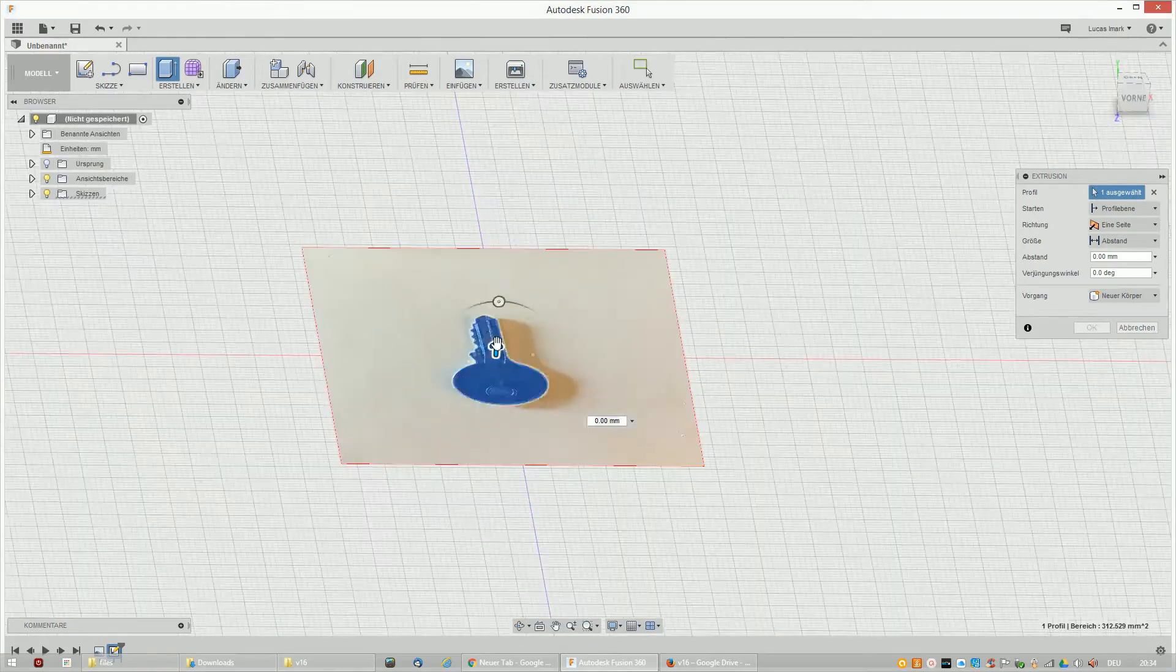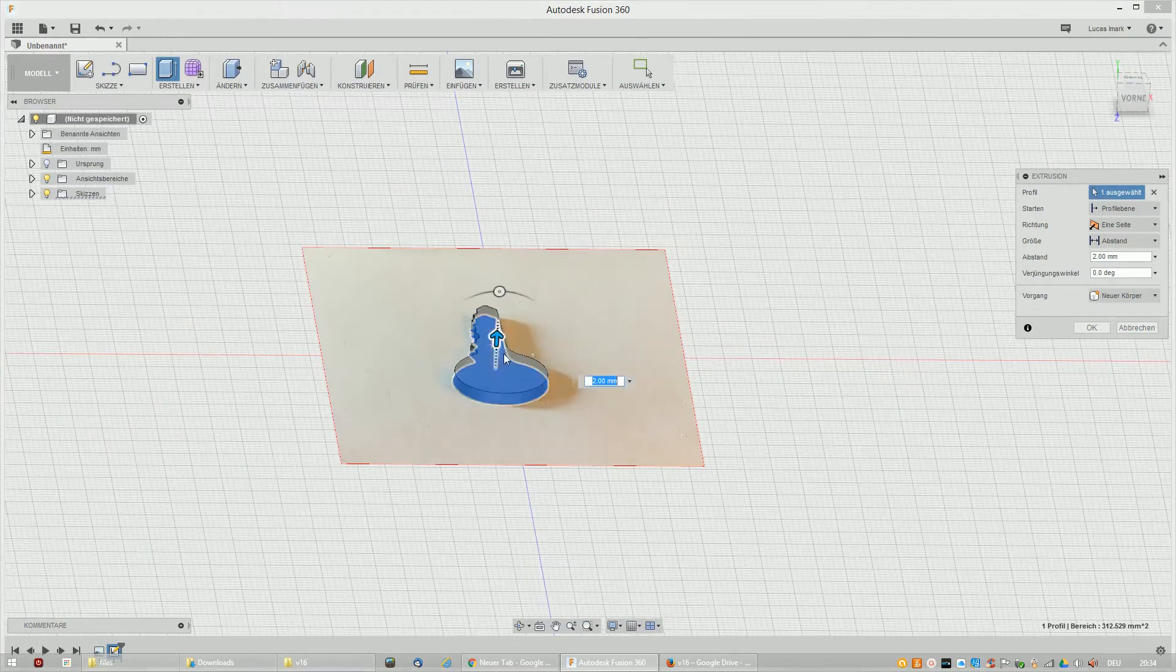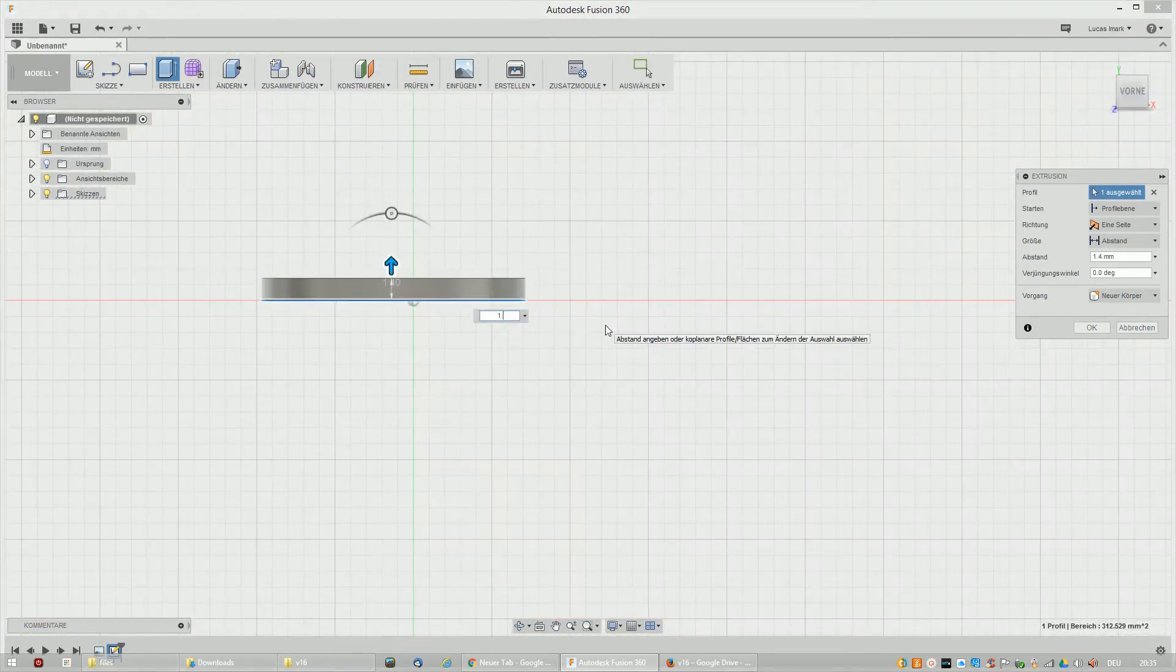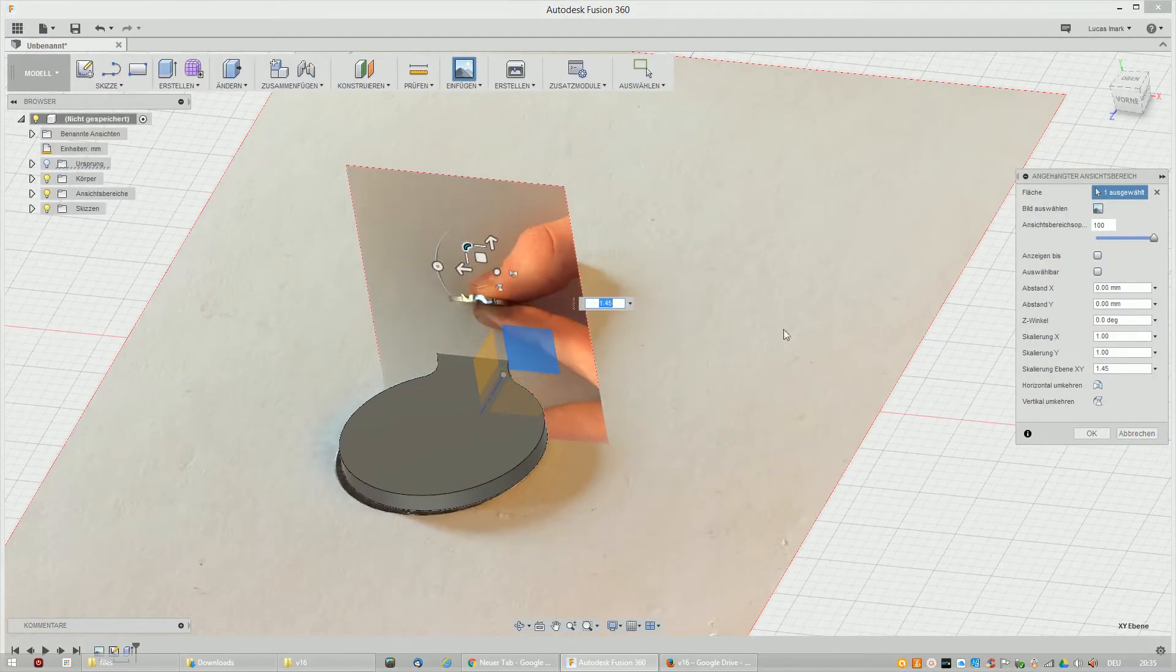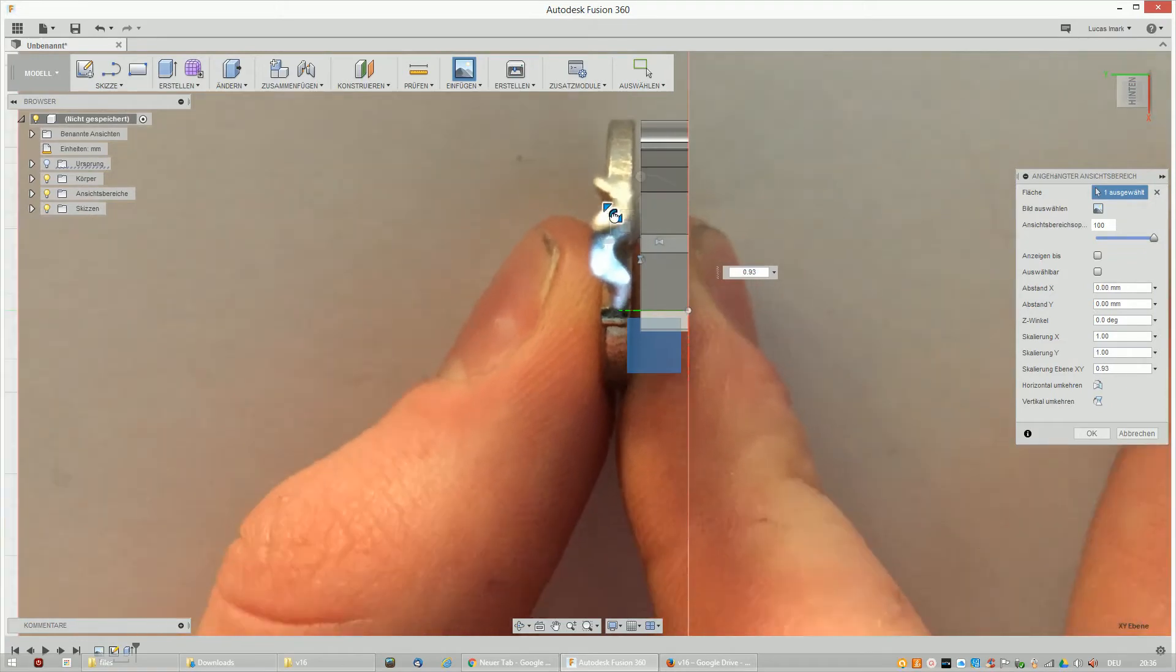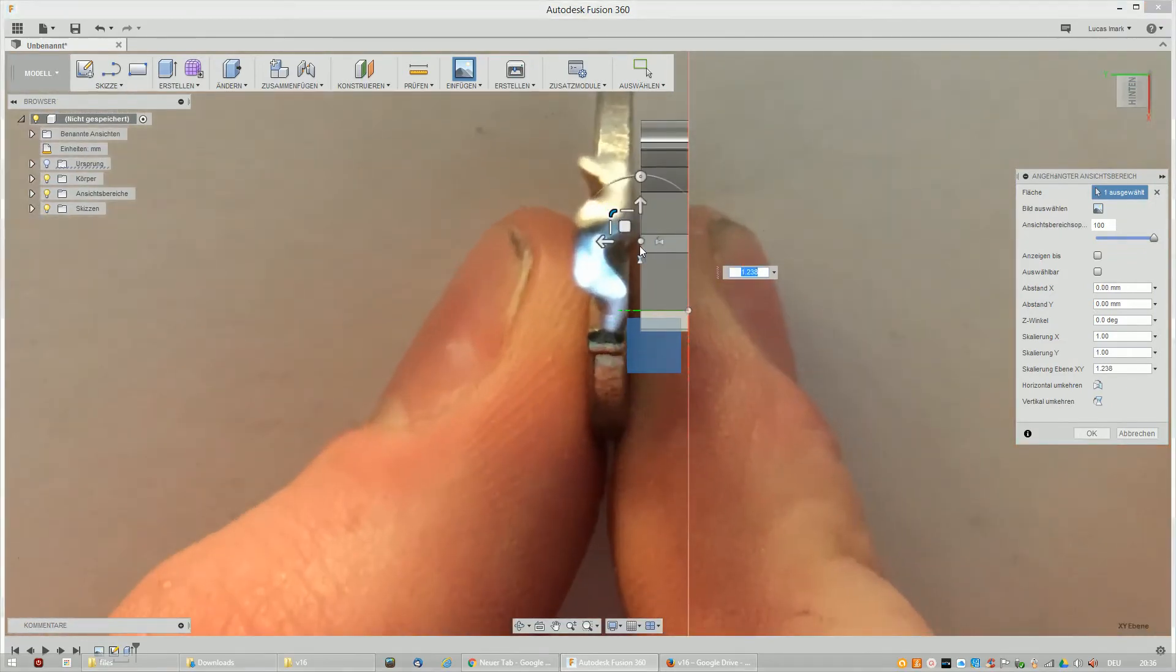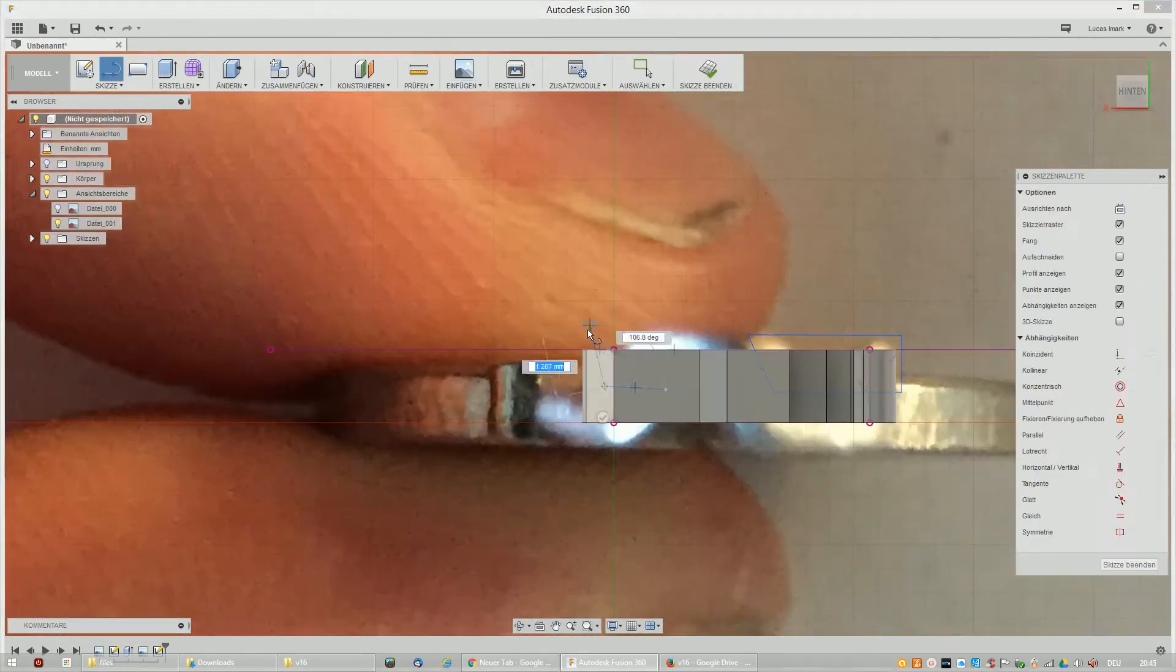Then I extruded them, printed it, and had my basic key shape. Then I needed to reposition the second picture and draw the shape from the front view. I drew it roughly and extruded the material away.